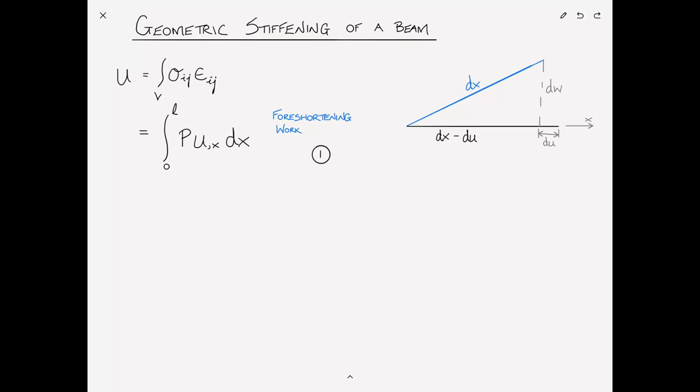Let's label this equation one. And now if we pay attention to this differential element a little bit more closely, by Pythagoras's theorem we can relate dx squared, which is the length of the hypotenuse, to the length of the other two sides, so that is dw squared plus (dx minus du) quantity squared. I can expand that out as dw squared plus dx squared minus 2 dx du plus du squared. The dx squareds can cancel, and then moving the minus 2 dx du to the left hand side, this can be rewritten as 2 du dx, just switching the order of that, is equal to dw squared plus du squared.